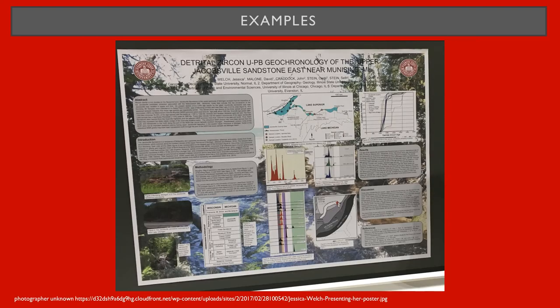In this example, the sections are clearly blocked, images and content are in proximity to each other, and there is a nice balance between content types, images, and text. What hinders this poster is the background image — it isn't set to a high enough transparency, so it competes with the poster content. You want to avoid that.